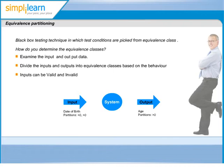Hence, our classes will be all date of birth less than zero, and the other class will be all date of birth greater than zero. Any value within the same class gives an output value from the same class — either age greater than zero or an error message. One should notice that in the first valid input class, the output will not be the same for each different input value, but will remain in the same class, which is age greater than zero.